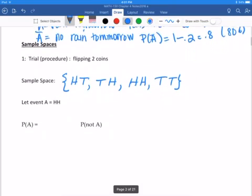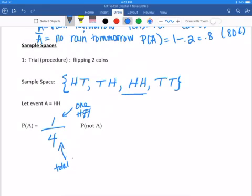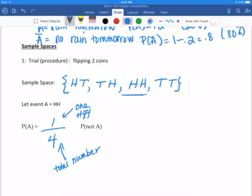So if event A is getting two heads in a row, then the probability of A, we take how many times A could happen, just once, over how many possible outcomes there are, which in this case is four. So this one came because there was just one head and then head. And then the four is the total number of possible outcomes.